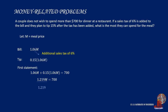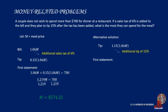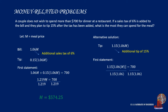By dividing both sides by 1.219, the value of M is computed as $574.25. An alternative solution is to integrate the total amount as 1.15 of 1.06 of the meal price equated to 700. By dividing both sides by 1.15 and 1.06, M still comes out as $574.25.